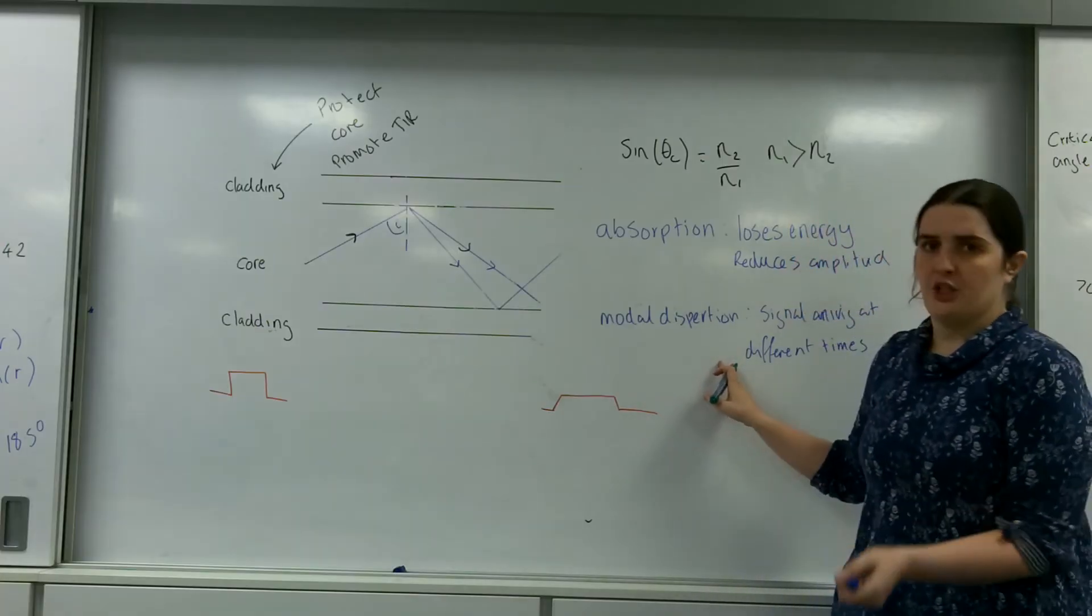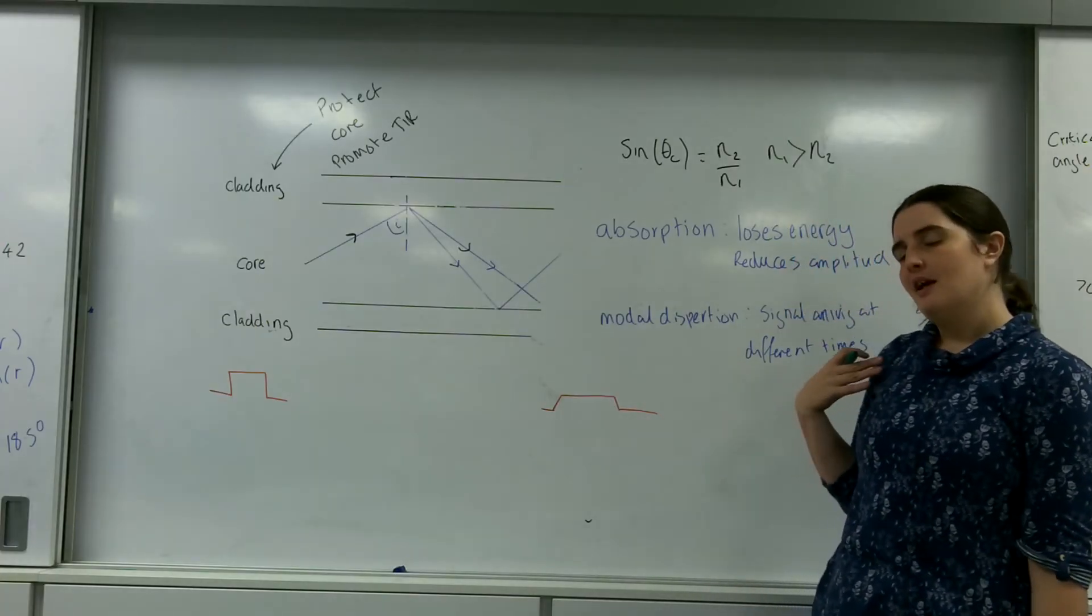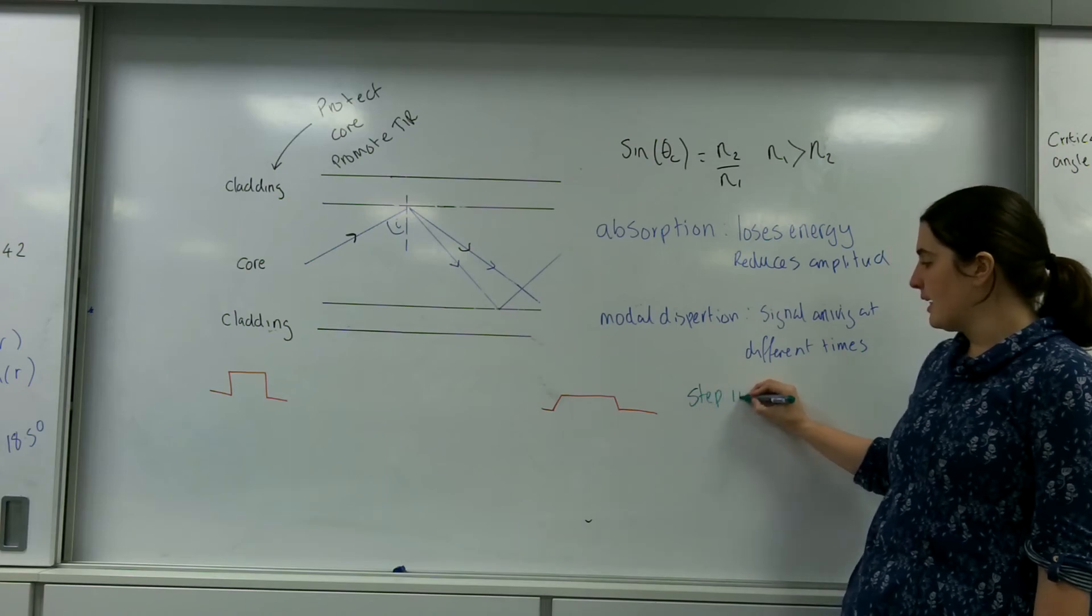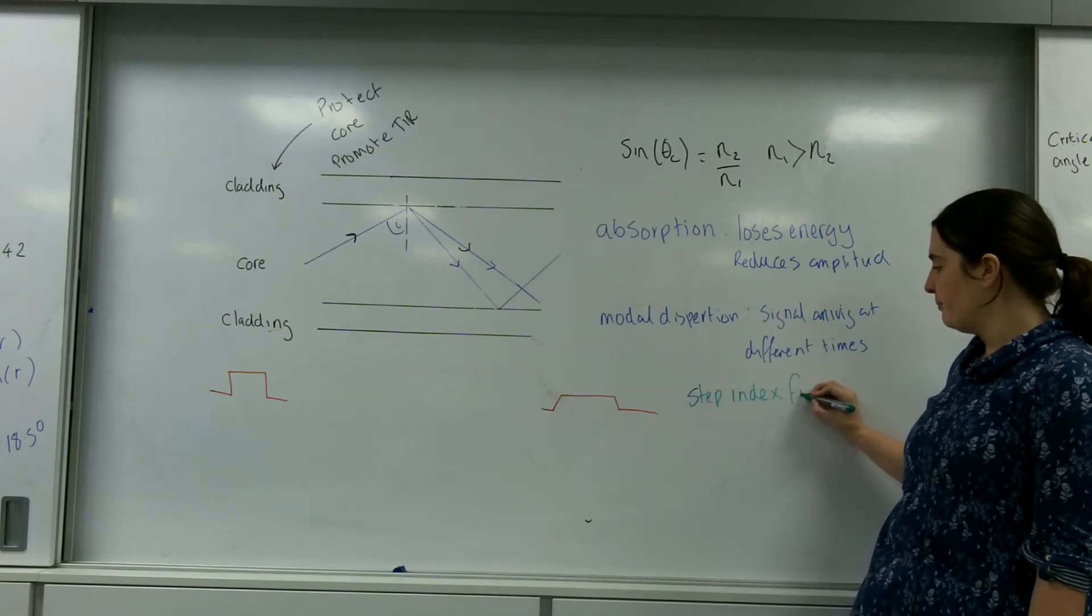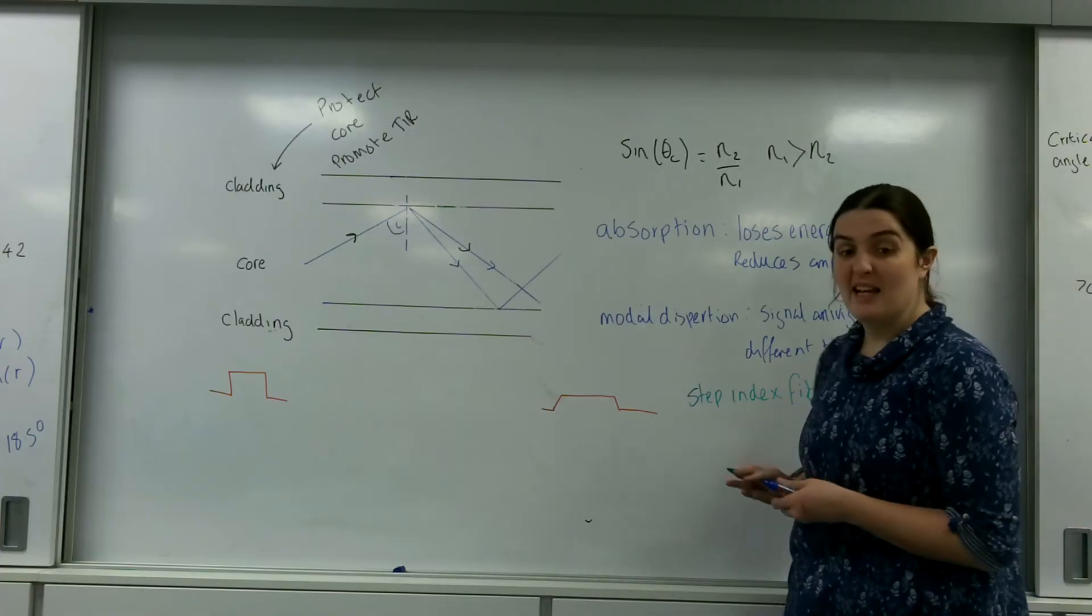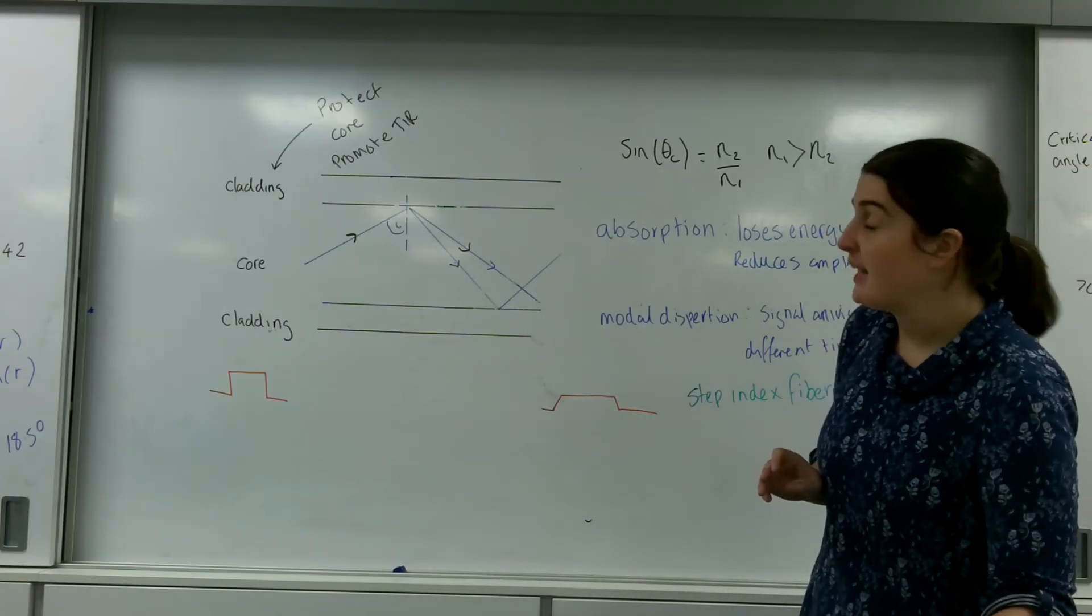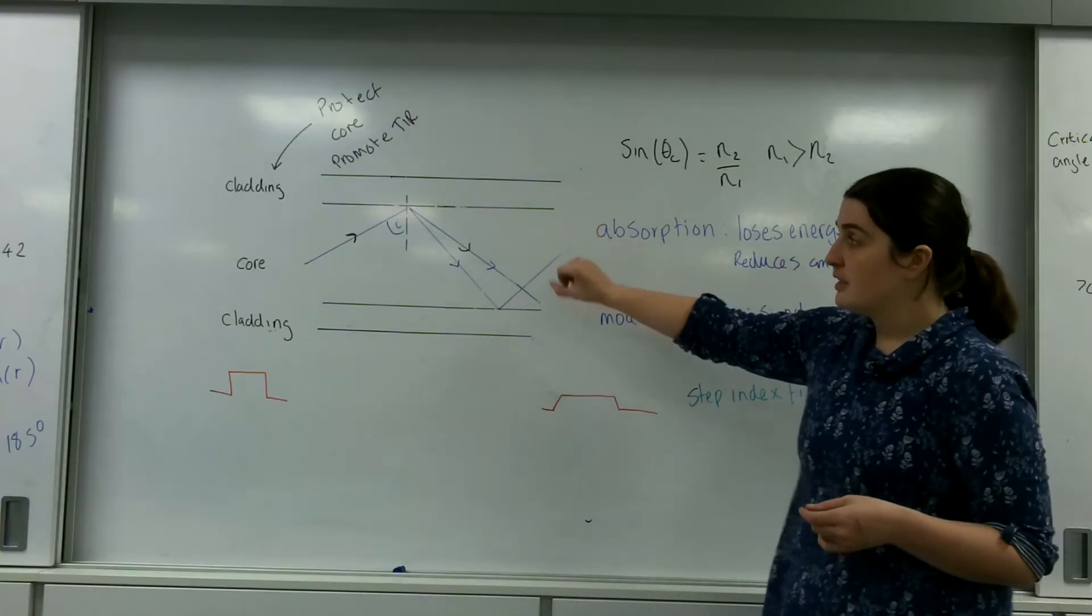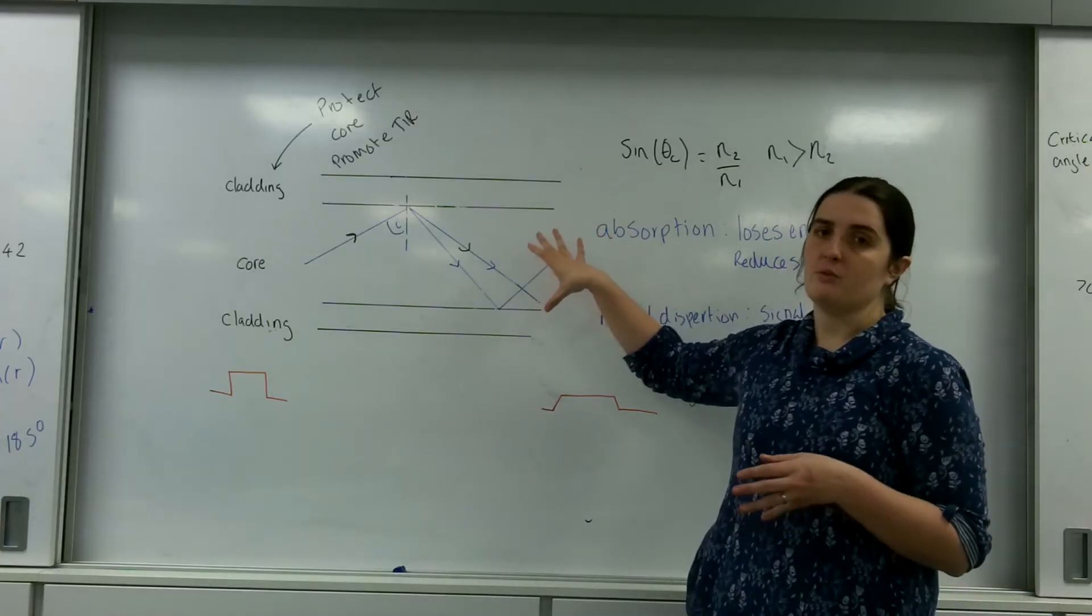And what a step index fiber, easiest way to explain it, it's kind of like a tie-dye effect. Inside this core, instead of this core having a whole refractive index 1.42, what it is, is that the regions of the core, different parts of it have different refractive indexes.